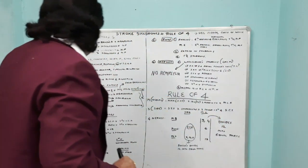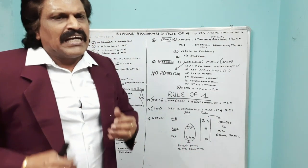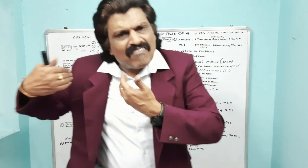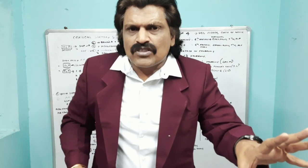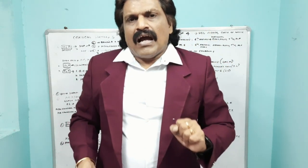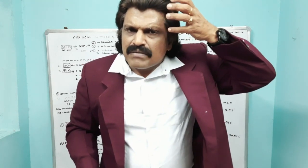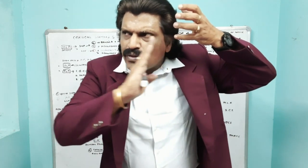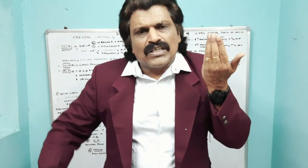If the stem of the MCA gets affected, the patient will have hemiplegia, hemisensory loss, and global aphasia because both superior and inferior divisions are affected. Importantly, they may have gaze deficits — if the left frontal lobe is affected, the left frontal eye field is affected and they cannot move eyes toward the right. So eyes look to one side with hemiplegia on the opposite side.